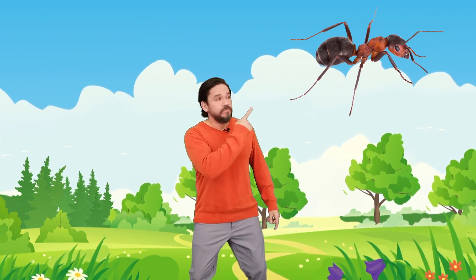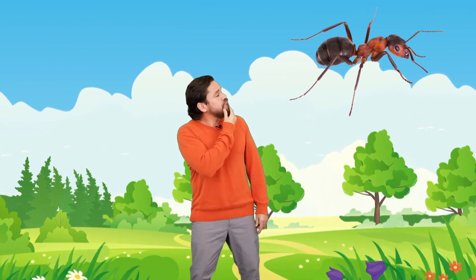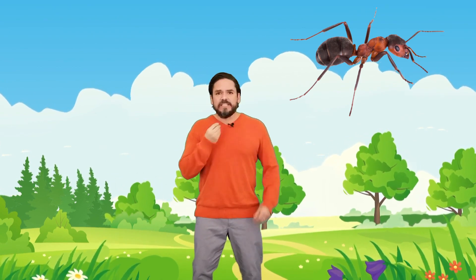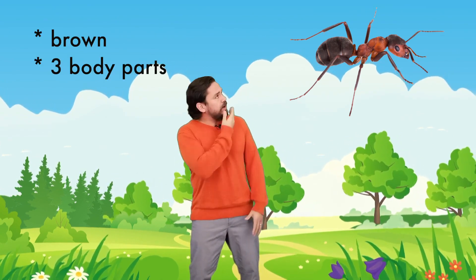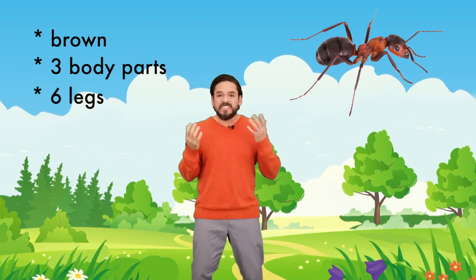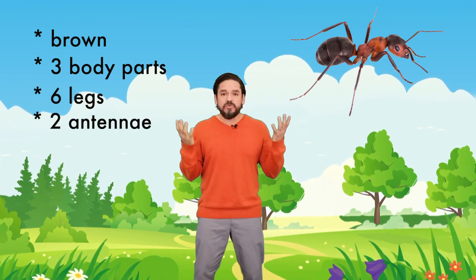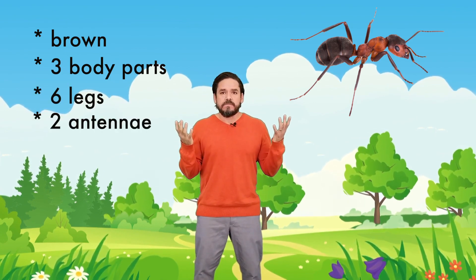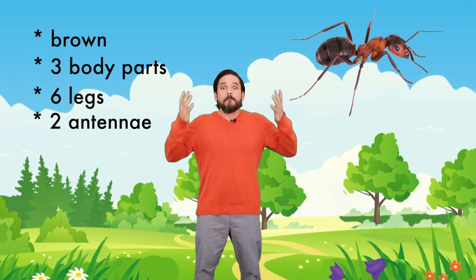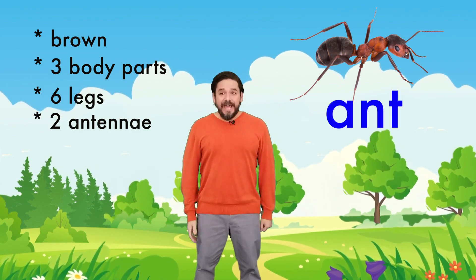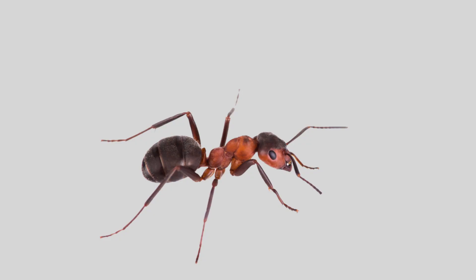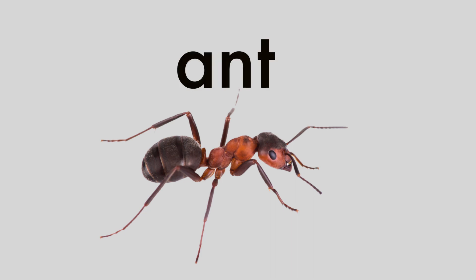What's that name? What's that insect's name? It's brown with three body parts, it's got six legs and two antennae. That's right, it's an ant! Ant — A-N-T. Ant.